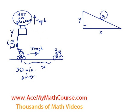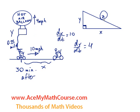We have a right triangle. We already know a few things: dx/dt is going to be 10 because that's the speed at which the bicycle is traveling. dy/dt, the rate at which y is increasing, is going to be 4 because it represents the speed at which the hot air balloon is rising. What we ultimately want to find is dz/dt, which represents the rate at which the distance between the hot air balloon and the bicycle is increasing.